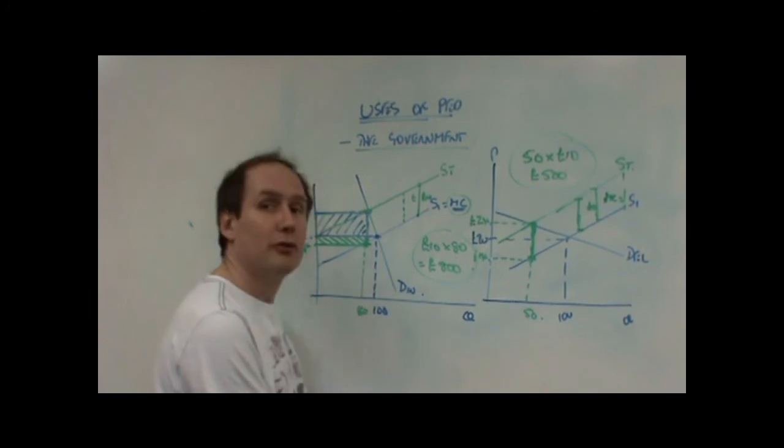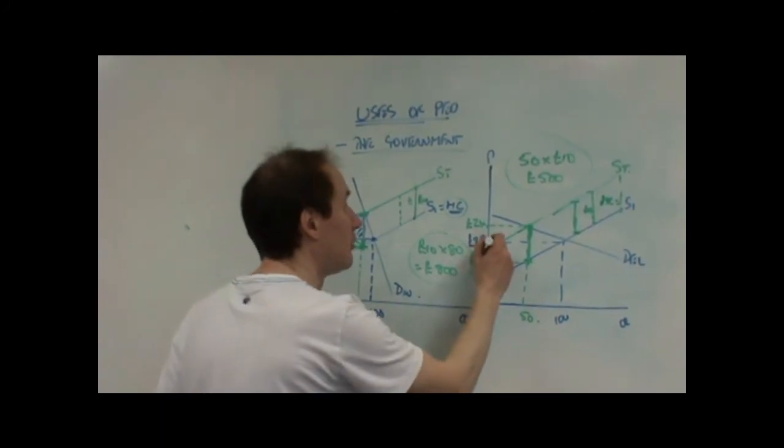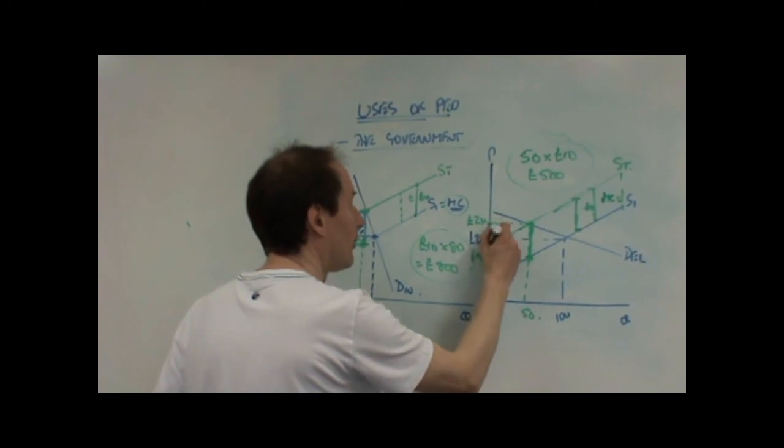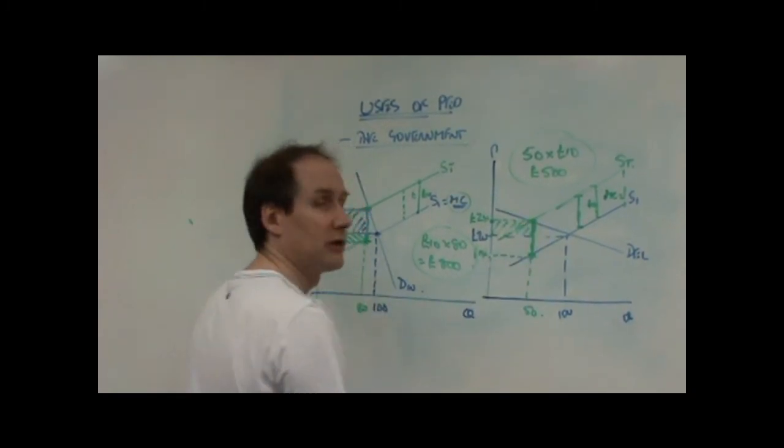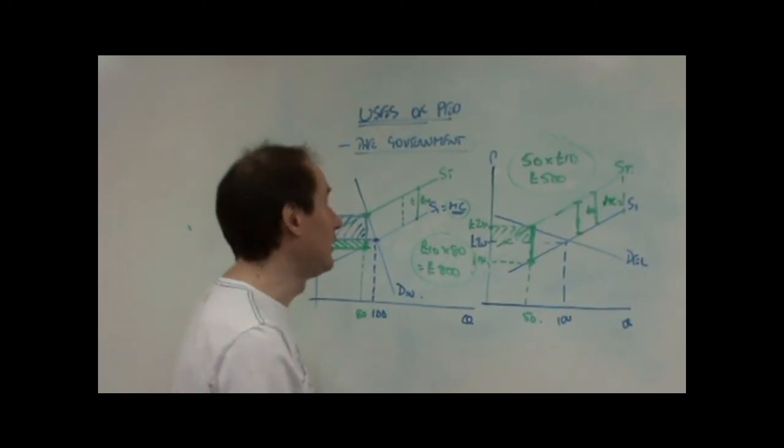And secondly, the producer is now paying a far higher proportion of the tax. From the consumer's point of view, price has only gone up by 4 pounds. On the 50 units that they now buy. From the producer's point of view, this is very bad news.